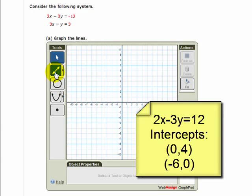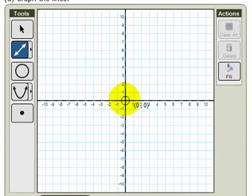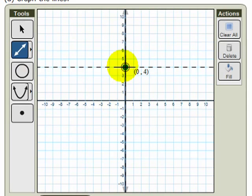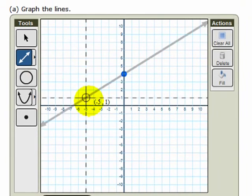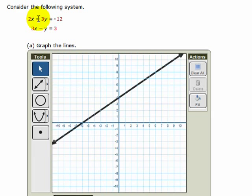So I choose the line tool, and I plot a point at 0, 4, and a point at negative 6, 0. That graphs this first line right here.